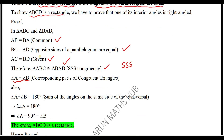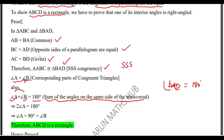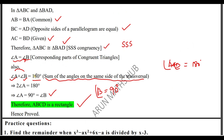We know that angle A plus angle B equals 180 degrees, because the sum of angles on the same side of the transversal is 180 degrees. Since angle A equals angle B, we have A + A = 180 degrees, so 2A = 180, giving A = 90 degrees. Therefore we have proved that one of the interior angles of the parallelogram equals 90 degrees. Hence ABCD is a rectangle. Hence proved.